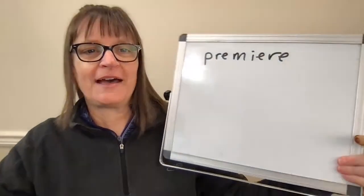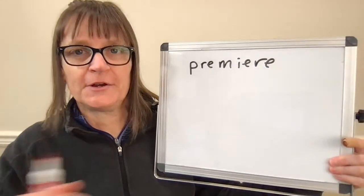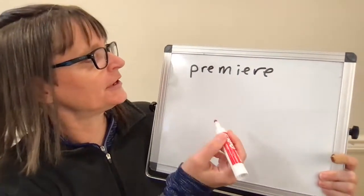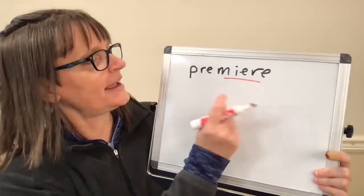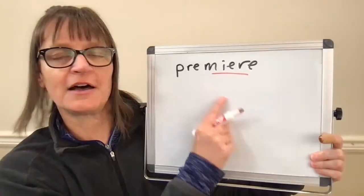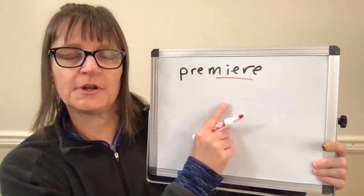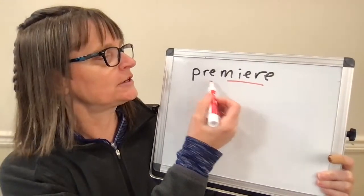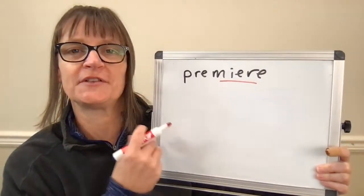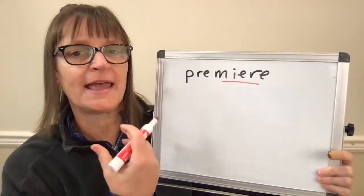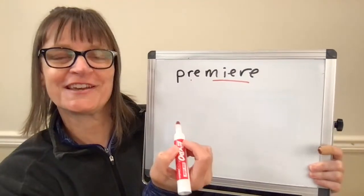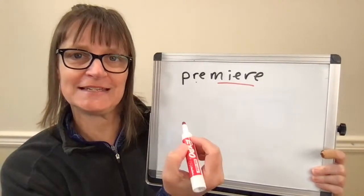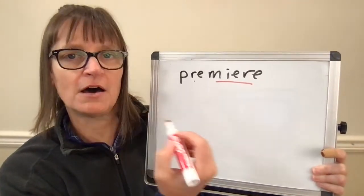I saw before the class started that we had a request for the word 'premier,' so I want to start with that word. Premier has second syllable stress, and what's challenging here is we have multiple R's in this word. Also, it looks like the first syllable should sound like 'pre,' but really in connected speech, this syllable is unstressed, so instead of having an E sound, it's going to have an 'uh' sound.